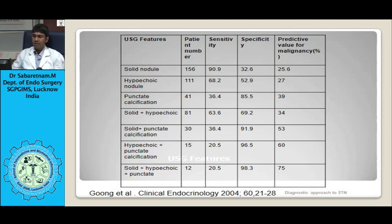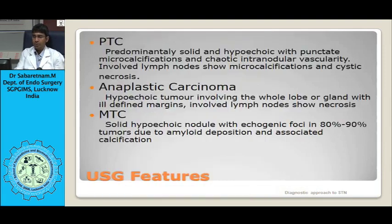The five ultrasound markers with high specificity for malignancy are: microcalcification, hypoechogenicity, irregular margins, intranodular vascularity, and a taller-than-wide shape. These five features, when present, carry a high specificity for malignancy, mostly papillary thyroid carcinoma, and the relative risk for malignancy can be calculated based on their presence.